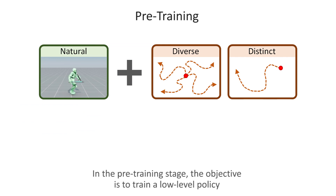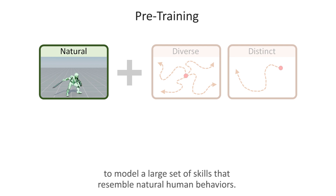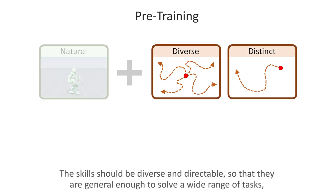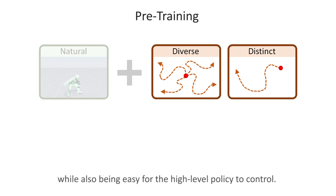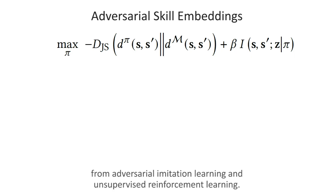In the pre-training stage, the objective is to train a low-level policy to model a large set of skills that resemble natural human behaviors. The skills should be diverse and directable, so that they are general enough to solve a wide range of tasks while also being easy for the high-level policy to control. This is accomplished by using an objective that combines techniques from adversarial imitation learning and unsupervised reinforcement learning.